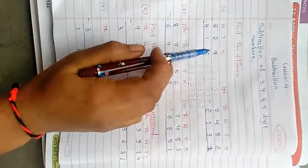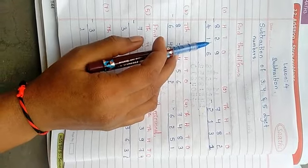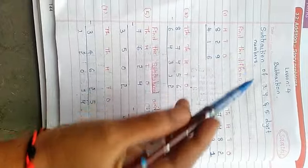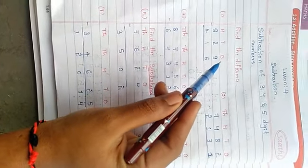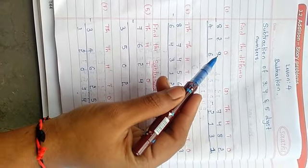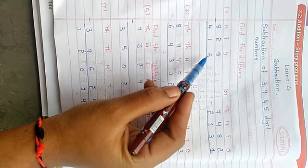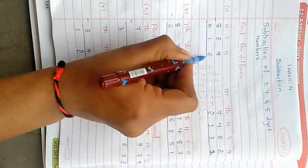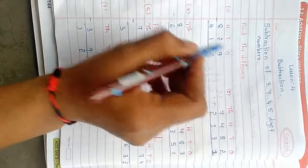Here's the first problem. I have taken 3 digit subtraction of 3, 4, 5 digit numbers. In the ones place, we have 9 ones. We have to subtract 6 ones. 9 minus 6 will be 3, so the answer is 3 ones.